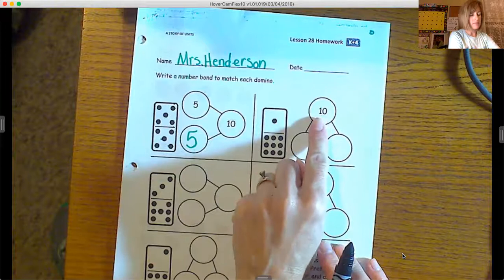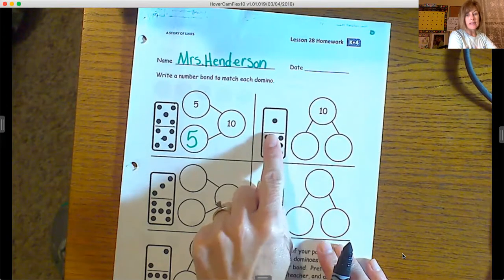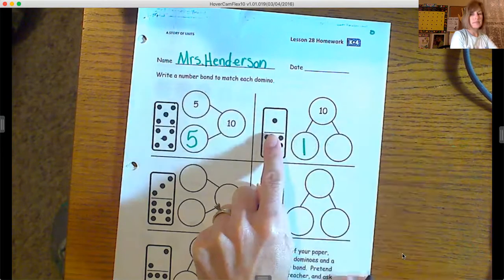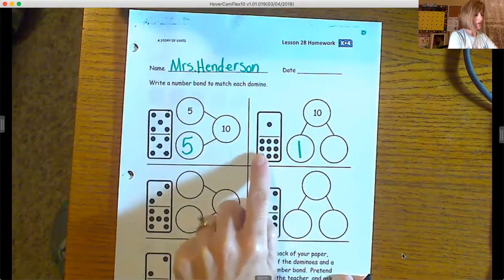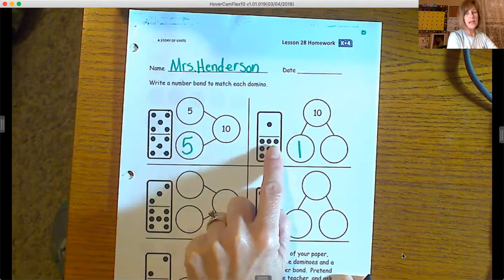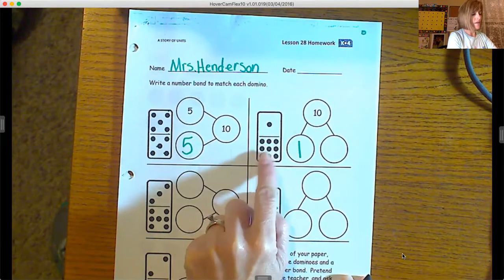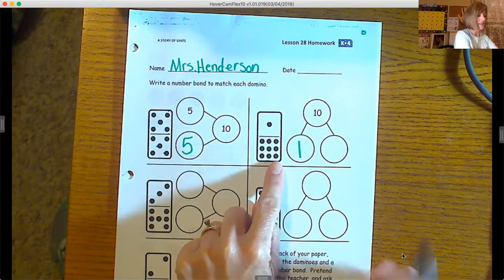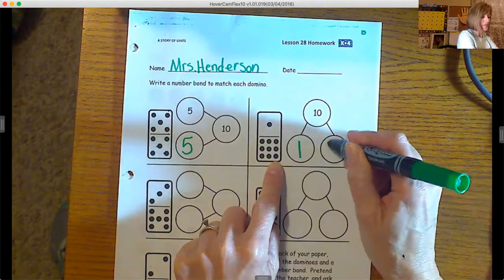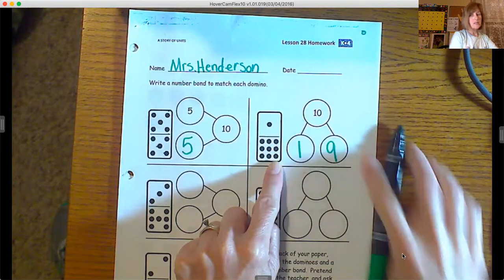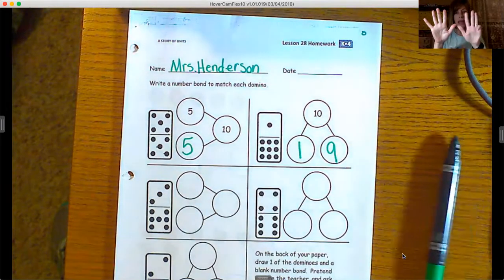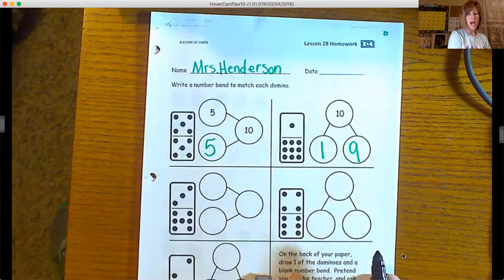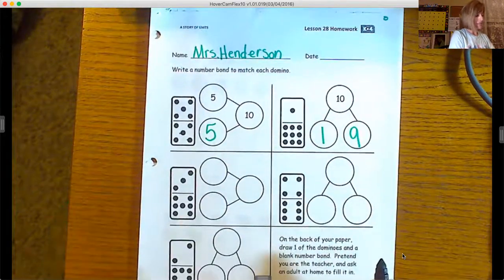Over here we have our whole number is ten. In this domino we have one, and this next domino we'll count one, two, three—make sure you're counting with me please—four, five, six, seven, eight, nine, so we'll put nine here. As we know, if we have nine and we add one, now we have ten.